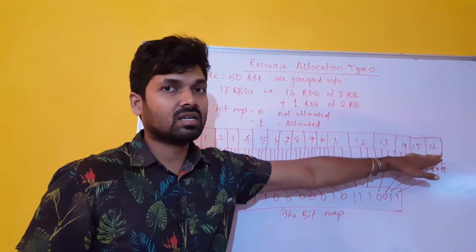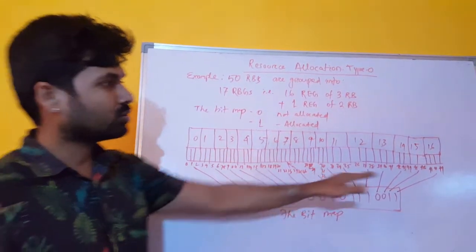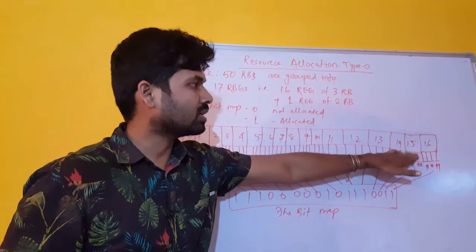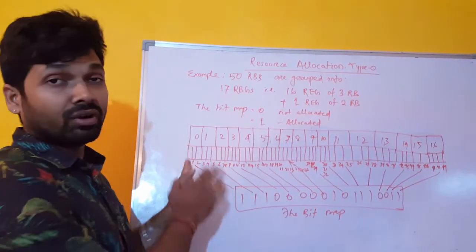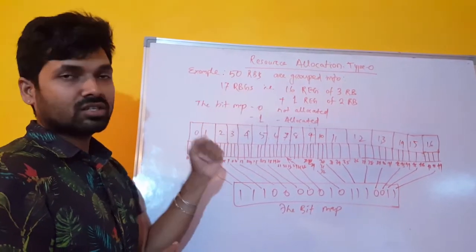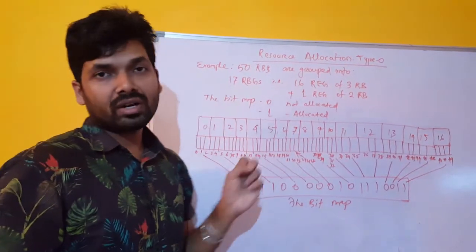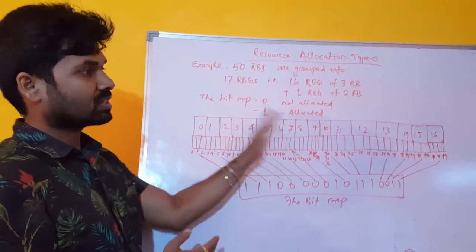And this 15 is 2 resource blocks. Or you can show 16 as 2 resource blocks and 15 as 3. So the point is we have divided resource blocks, 3 resource blocks, 16 resource element groups and 2 resource blocks for 1 resource element group. So total 17 groups.